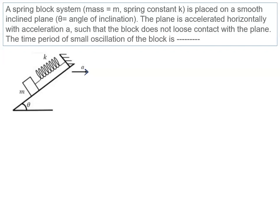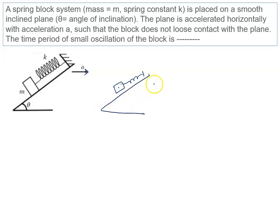First, note that the spring and block are connected, and there is acceleration in the system. Now, which force acts downward? If this angle is theta, the downward force along the incline is mg sin theta.